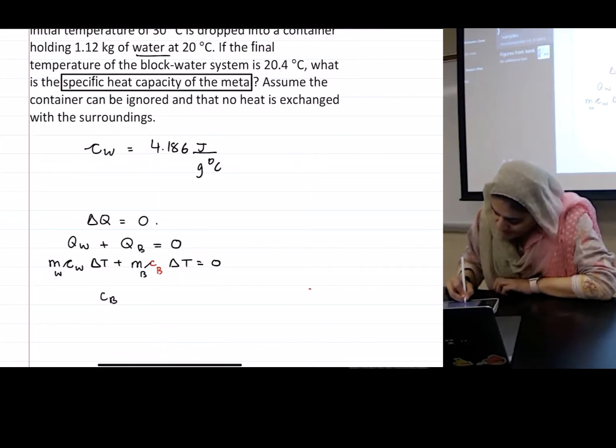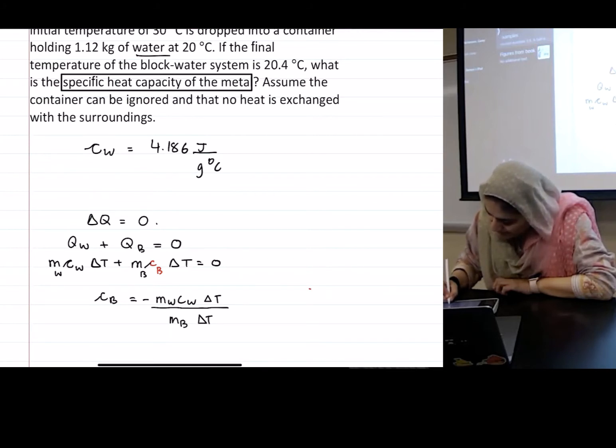So then I have to do... I'll keep the c's on this side. c_b equals minus m_w c_w delta T_w divided by m_b delta T_b. This would be the delta T of water, and this will be the delta T of the block.